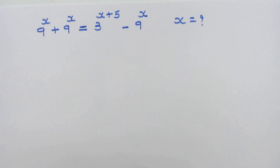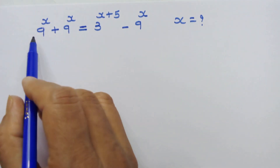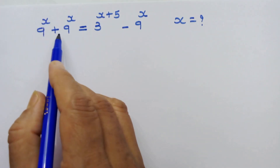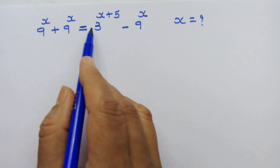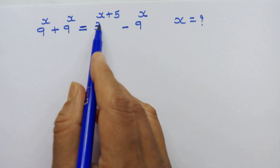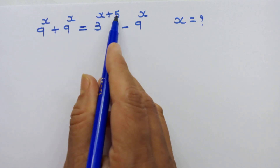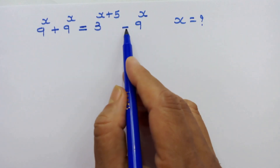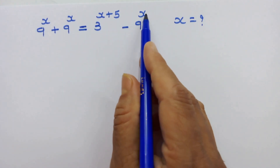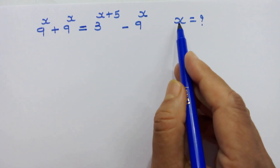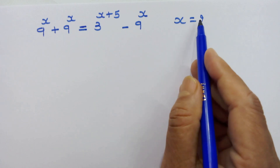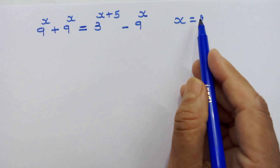Hello my dear friends. Now we have 9 raised to x plus 9 raised to x is equal to 3 raised to x plus 5 minus 9 raised to x, and we have to find the value of x.